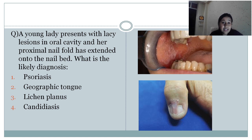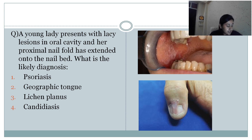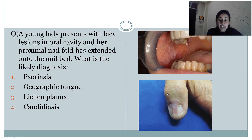Next question: a young lady presents with lacy lesions in the oral cavity and her proximal nail fold has extended onto the nail bed. The likely diagnosis is lichen planus. Lichen planus in the oral cavity presents as white lacy appearance over the buccal mucosa, with history of burning sensation while having food. The nail change is called pterygium — where the proximal nail fold extends up to the nail bed. This is also very common in lichen planus.